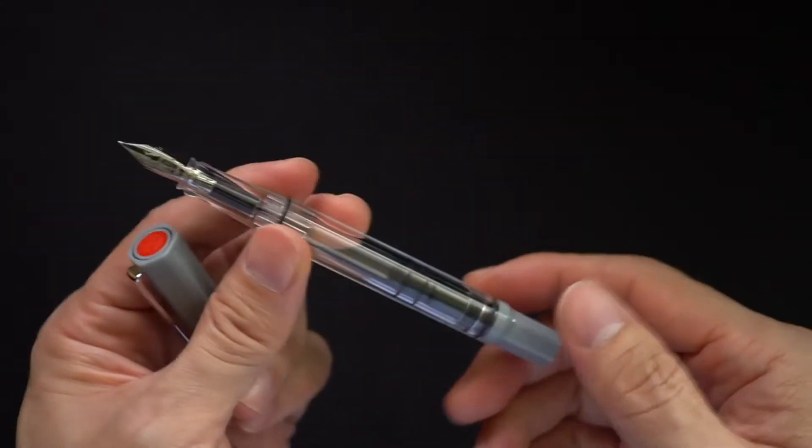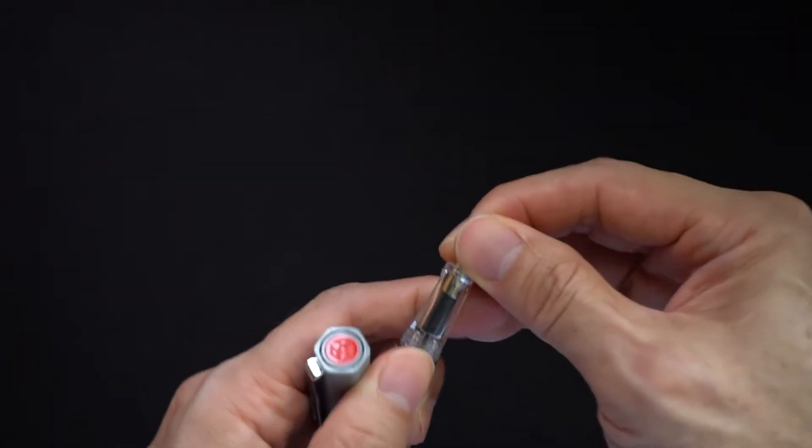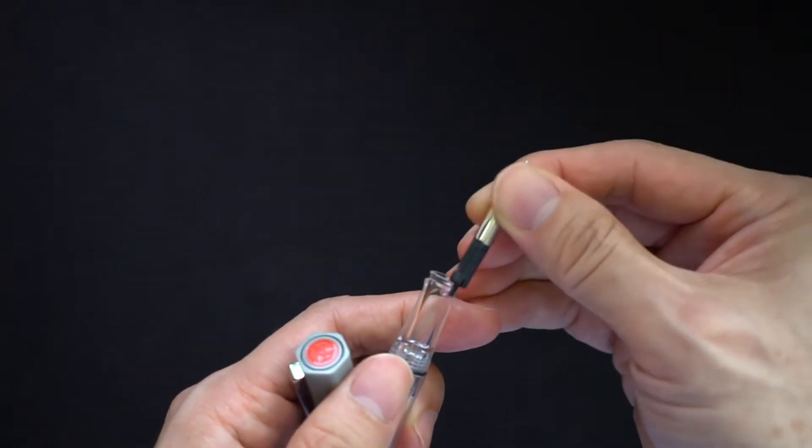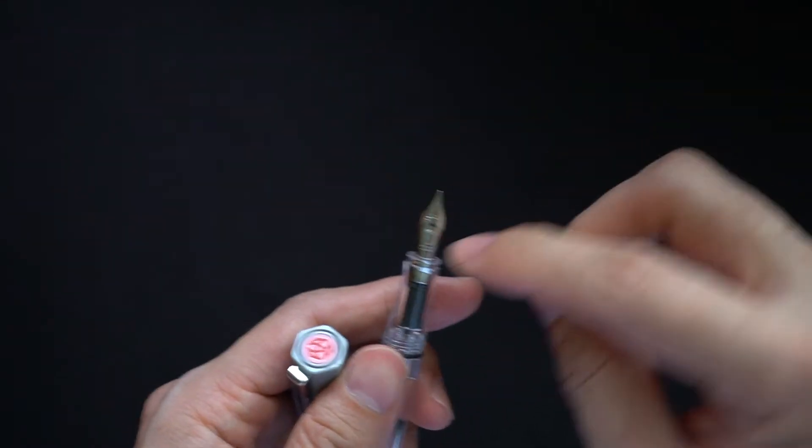As a pen itself, it can be totally dismantled. First of all, you can just pull like this and you can pull off the nib. Just be careful when you put it back that you align it properly.